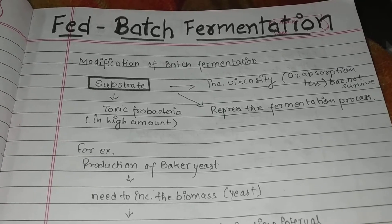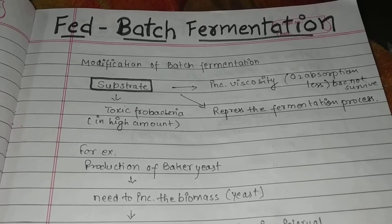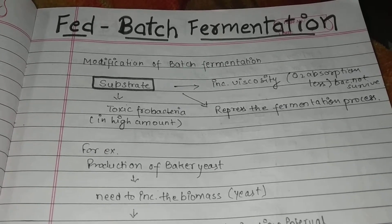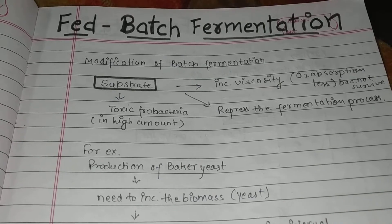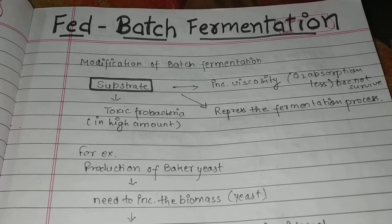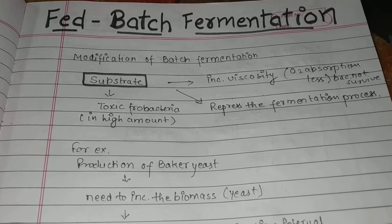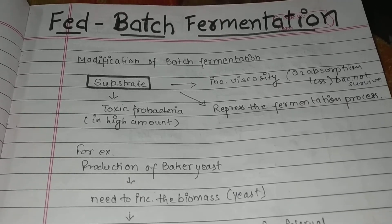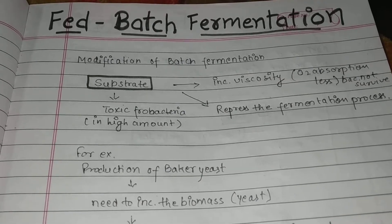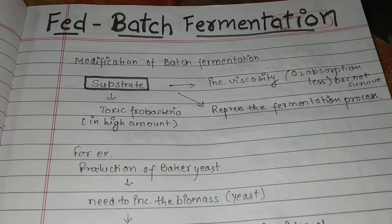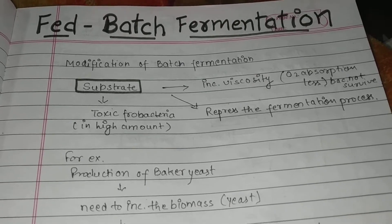We need this modification because, although batch fermentation is good and complete in itself, in batch fermentation we add substrate and microorganisms at once, then seal it, and the product forms after some time. Sometimes what happens is the substrate we add all at once in the batches goes harmful for the microorganisms, and then the process of fermentation will not take place and the bacteria or microorganisms will die.